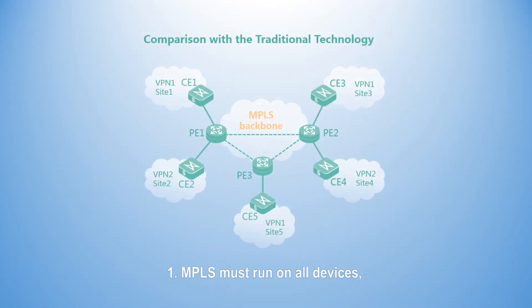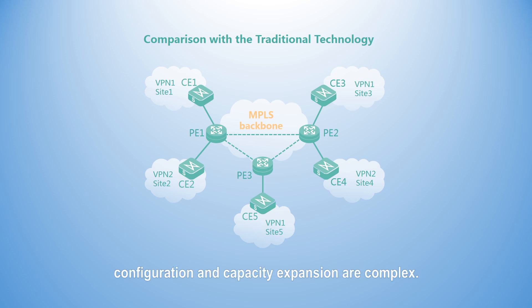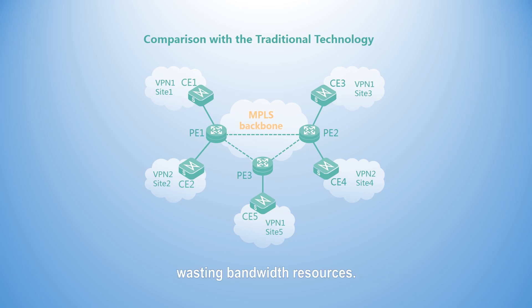First, MPLS must run on all devices and full mesh connections must be set up network-wide. In cases where the network scale is particularly large, configuration and capacity expansion are complex. Second, MAC addresses are learned by MAC address flooding, which results in a large number of broadcast packets, wasting bandwidth resources.